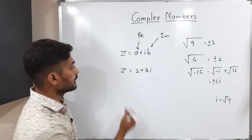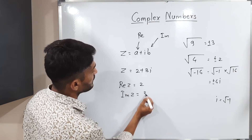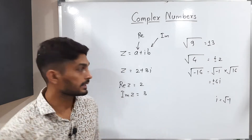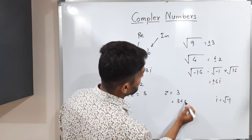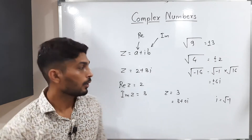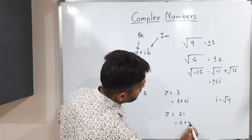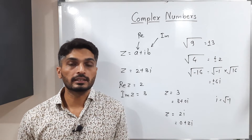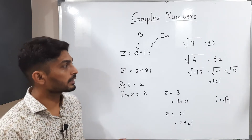Here a is called the real part of z and b is called the imaginary part of z. In this example, the real part is 2 and the imaginary part is 3. In some cases the real part or imaginary part can be zero. For example, z equal to 3 is just 3 plus 0i, so the imaginary part is 0 and we call it a real number. If z equals 2i, that means 0 plus 2i, the real part is 0 and we call it a purely imaginary number.